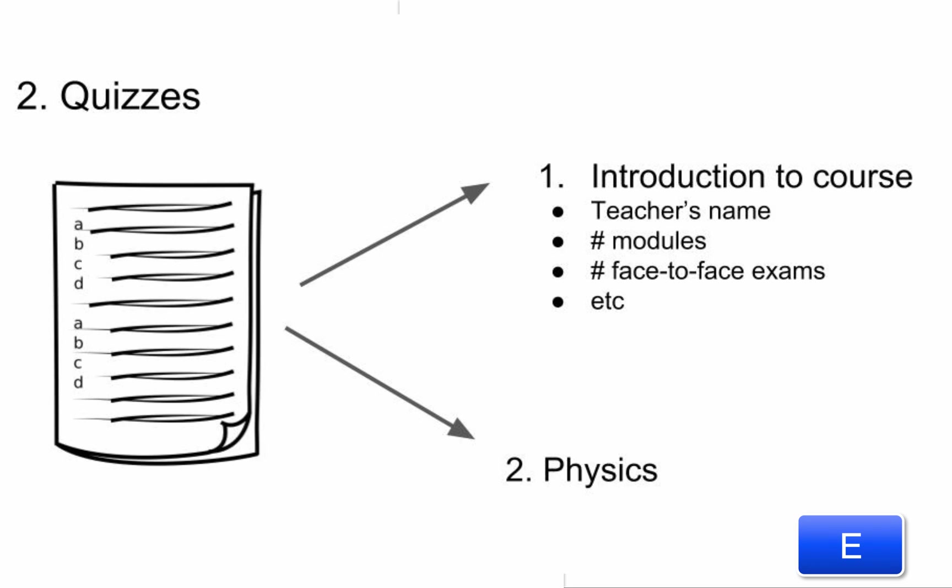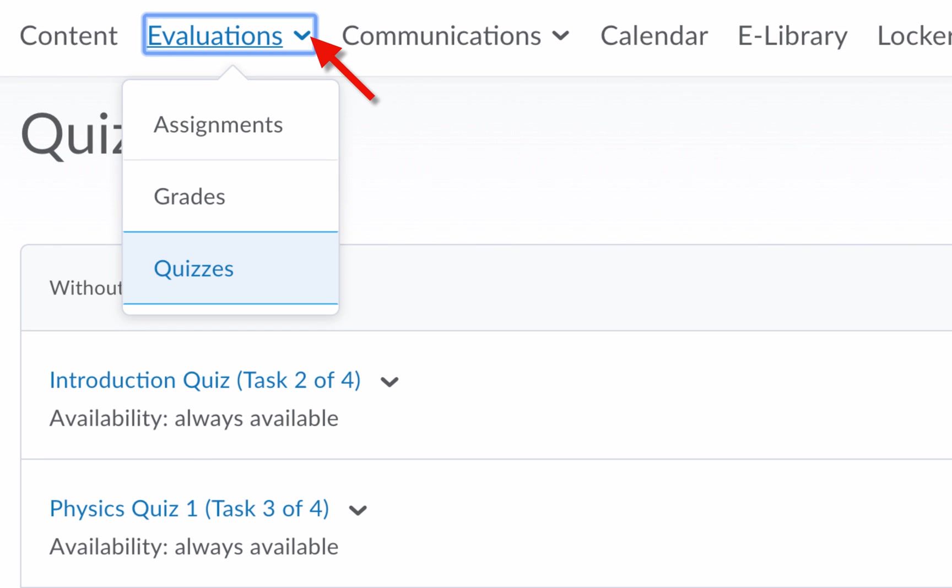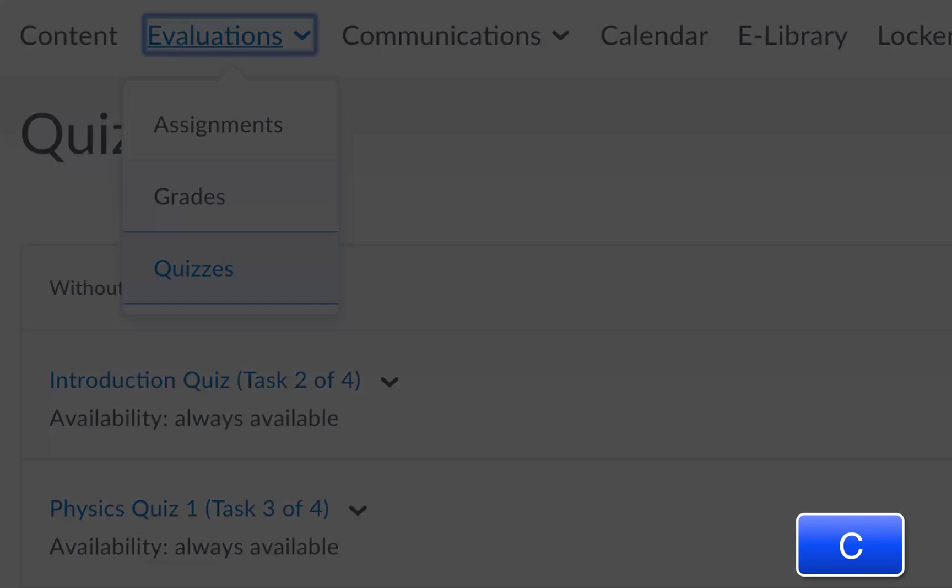In the startup process there are two quizzes. The first quiz is introduction to the course: what is your teacher's name, the number of modules, how many face-to-face exams there are. The second quiz has to do with physics. To find the quizzes go to evaluation, select quizzes, and then select the quiz you wish to do.